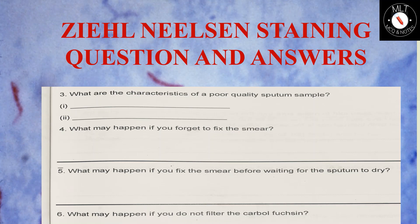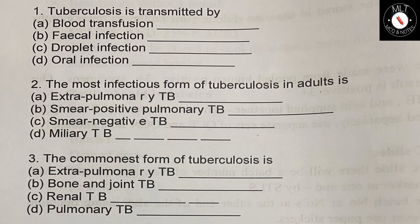First question: Tuberculosis is transmitted by — option A: blood transfusion, option B: fecal infection, option C: droplet infection, option D: oral infection. The answer is option C, droplet infection. Tuberculosis is transmitted by droplet infection.